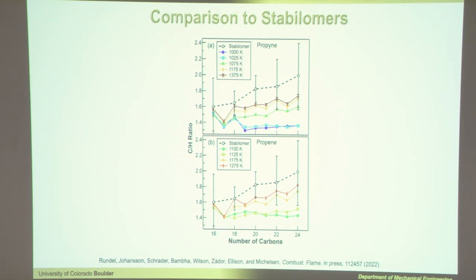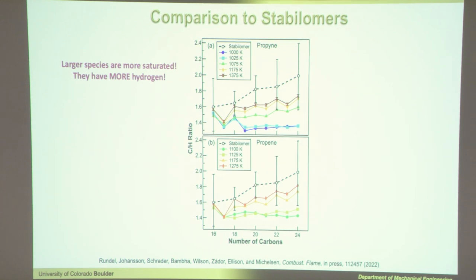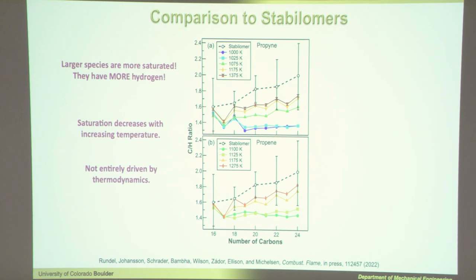The dashed line represents the stabilomers' carbon-to-hydrogen ratio for each number of carbons. Larger species are more saturated — they have more hydrogen — and this decreases with temperature, as we've seen. Importantly, this is not driven entirely by thermodynamics — it's not the most thermodynamically stable species by a long shot. There's something dynamic going on that's keeping us from sinking into those thermodynamic wells. We have some kind of dynamic mechanism where things are reacting and we're making particles. Resonance-stabilized radicals may be driving inception through radical chain reactions.